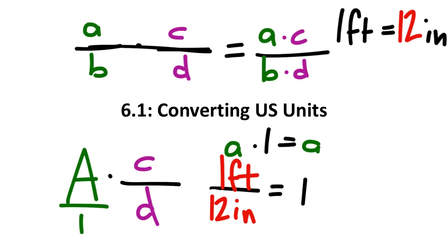In dimensional analysis, we use a fraction like this — equal to one — to change units from one type to another. It's not just for US units; we can use it with metric units, from metric to US units, or from US to metric units. It doesn't matter.